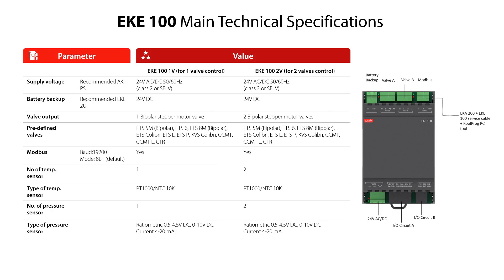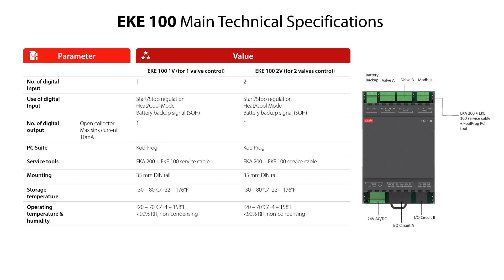Here you see some of the main technical specifications of the EKE100 models for 1 and 2 bipolar stepper motor valve control. We will not go into details here since you can find more information in the EKE100 datasheet which is available on Danfoss.com. Here you see more of the main technical specifications of the EKE100 models for 1 and 2 bipolar stepper motor valve control.